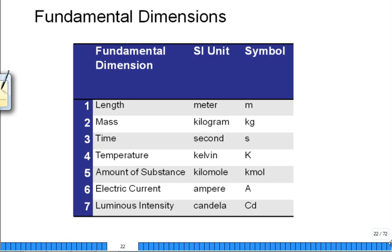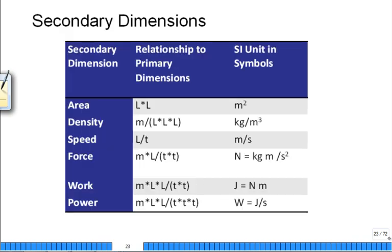Fundamental dimensions, how many are there? Seven. What are they? You could probably list off four of them, like length, mass, time, temperature. The amount of a substance, think about kilomoles. Electric current, ampere. And luminous intensity, candela. It's some international standard. These are the fundamental building blocks. We could build all other dimensions out of these. Area is length times length. Density is mass over length, length, length. Length per unit time is speed. Force is there. Work is there. Power is there. You've seen it before.